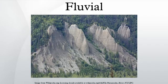A river is continually picking up and dropping solid particles of rock and soil from its bed throughout its length. Where the river flow is fast, more particles are picked up than dropped. Where the river flow is slow, more particles are dropped than picked up. Areas where more particles are dropped are called alluvial or floodplains, and the dropped particles are called alluvium.